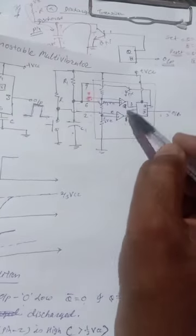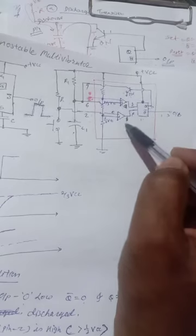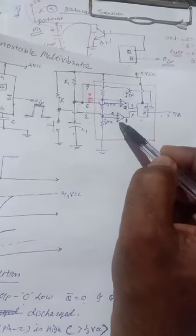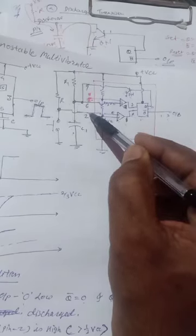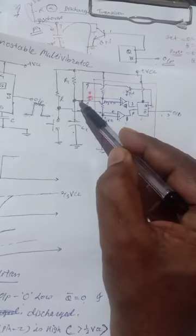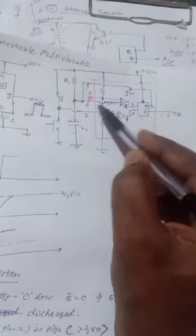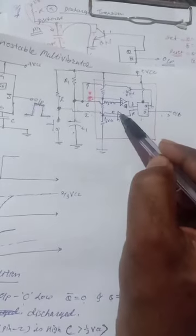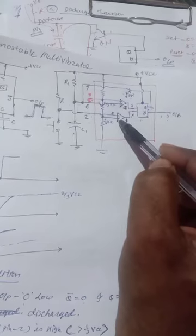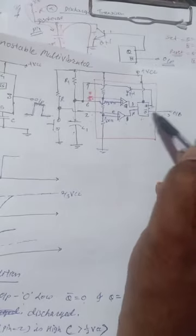In the internal block diagram, the upper comparator is a non-inverting type and the lower one is an inverting comparator, because the inverting input is connected to the changing voltage. The non-inverting input is connected to an external changing voltage. This voltage is compared with one-third VCC at the lower comparator and two-thirds VCC at the upper one. The output of the SR flip-flop provides Q-bar as the output.